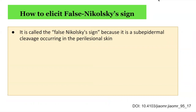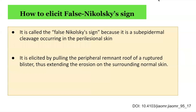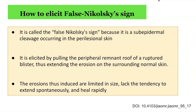It is elicited by pulling the peripheral remnant roof of a ruptured blister, which thus extends the erosion onto surrounding normal skin. The erosions induced are limited in size, lack a tendency to extend spontaneously, and generally heal rapidly.